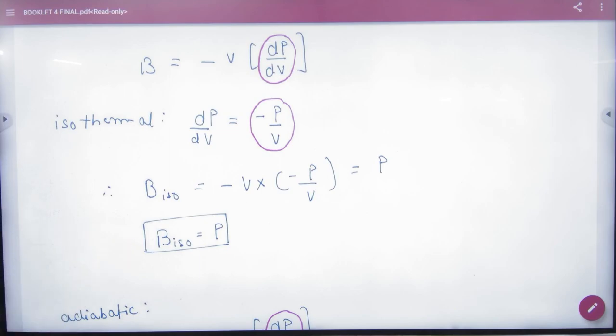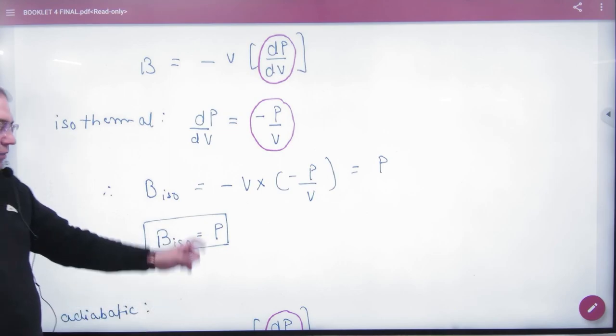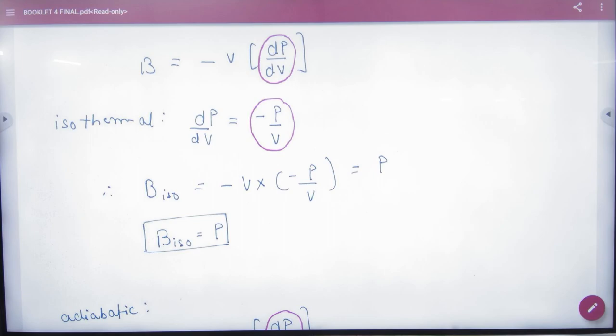Pressure will be. Which gas is also the bulk modulus. So, isothermal bulk modulus is equal to pressure p.